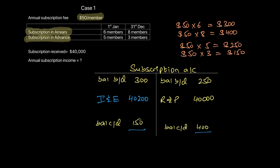This figure of $40,200 goes to the income and expenditure account as your annual subscription income. One more thing: using this figure, we can also calculate the number of members. If the annual subscription is $40,200 and each member pays $50, dividing gives 804 members — so this club has 804 members in our example.